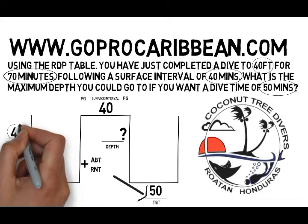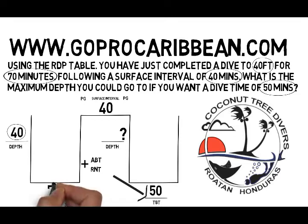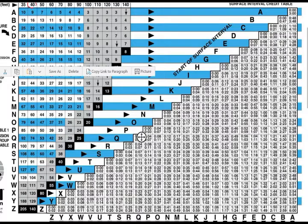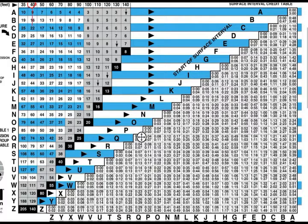Focusing now on that first dive. Working through the diagram from left to right, we've got a 40-foot dive for 70 minutes and a blank for pressure group. We need to find that pressure group using side one of the table. Looking at our table, finding the 40-feet column, we can scroll down until we find our dive time of 70 minutes. We can't find 70 minutes exactly, so we round up to 74 minutes, and that puts us in pressure group Q.